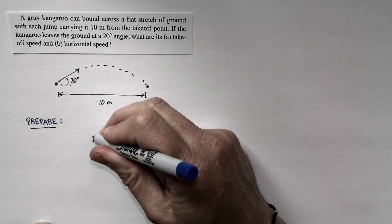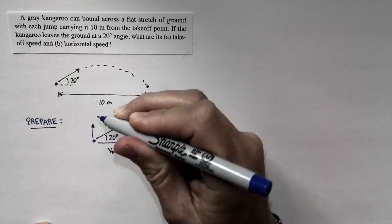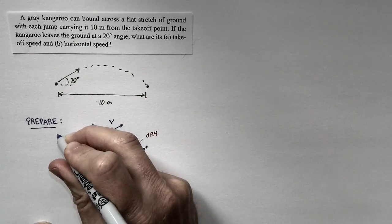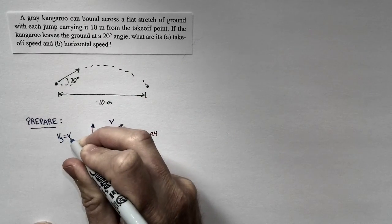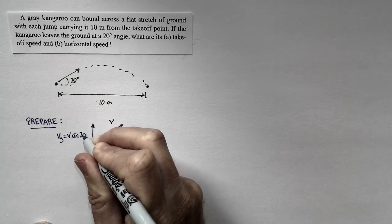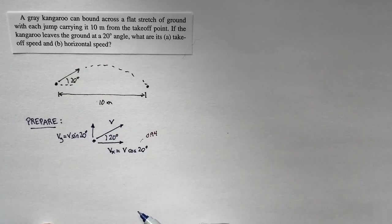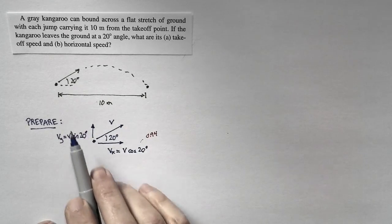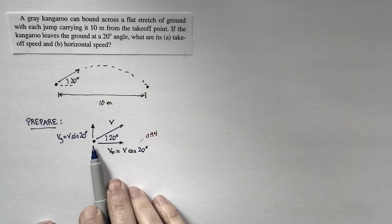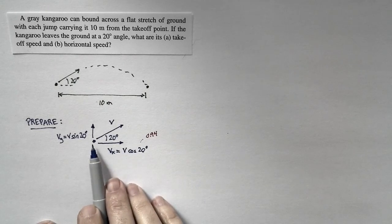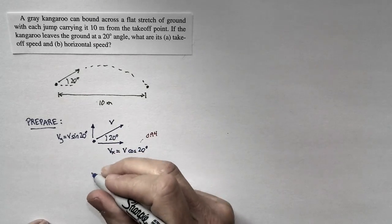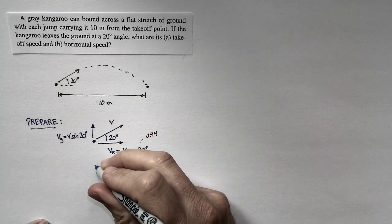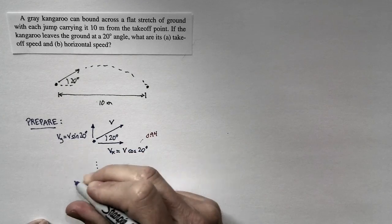The vertical speed is going to be less. The vertical speed, vy, is equal to v times the sine of 20 degrees — that'll be a much smaller speed. So the kangaroo is leaving the ground moving horizontally and vertically. And remember, we know different things about the horizontal motion and the vertical motion.